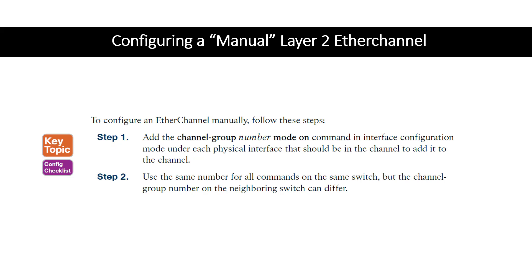We go into global config mode, then into the interface we want to be part of the EtherChannel. Once in interface configuration mode, we say 'channel-group [number] mode on.' This only pertains to a manual Layer 2 EtherChannel. You put that configuration under the physical interface and it adds that physical interface to the channel. For other physical interfaces you want to add to that EtherChannel, use the same channel group number on those other interfaces.